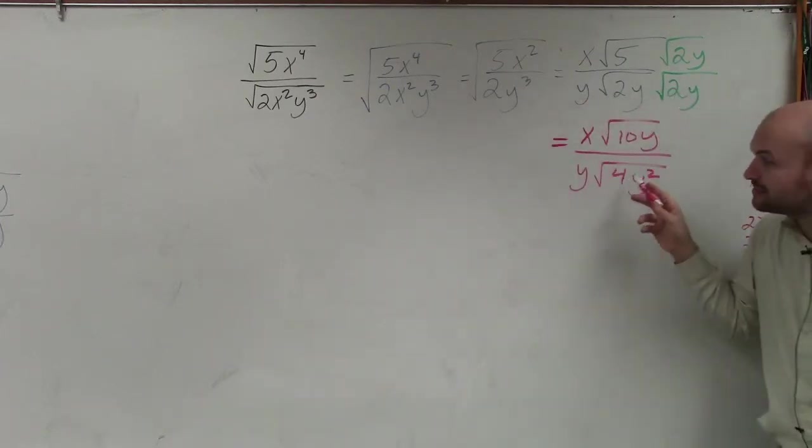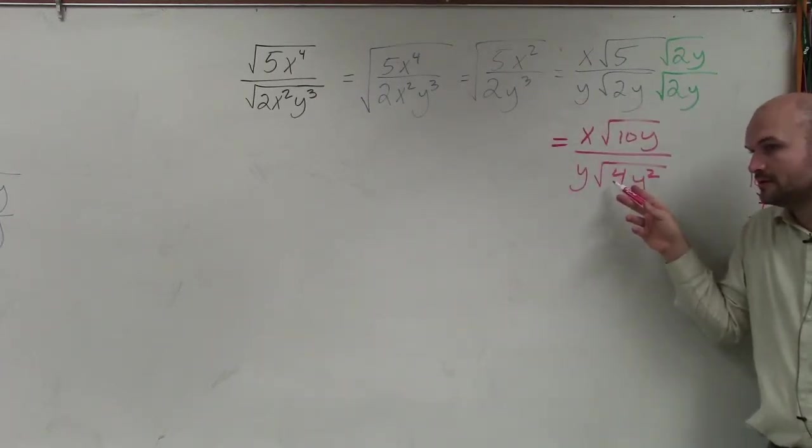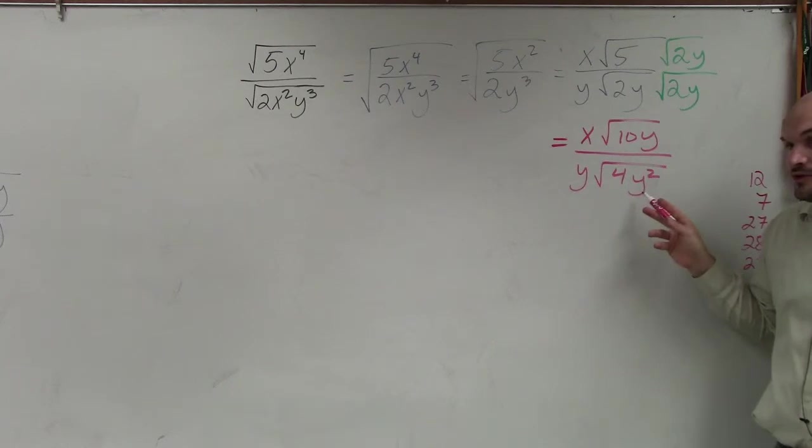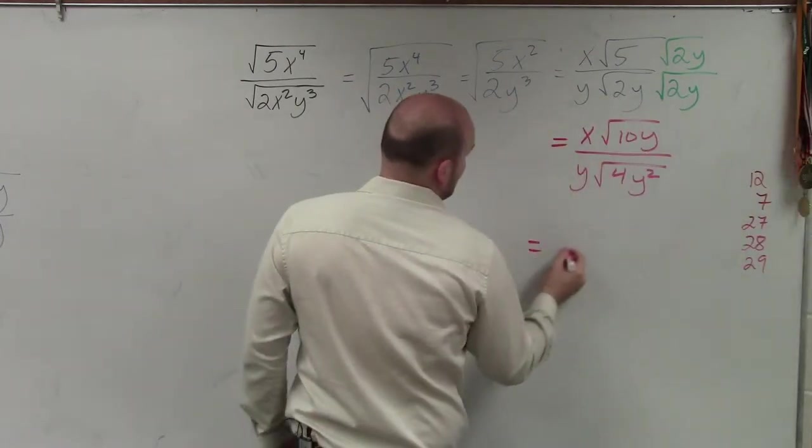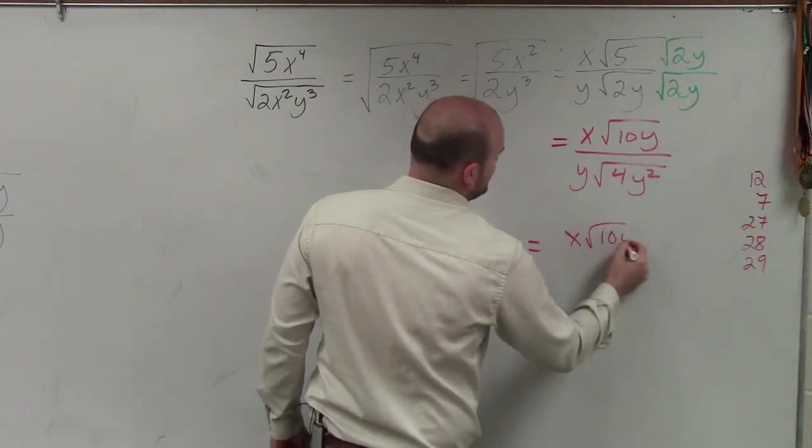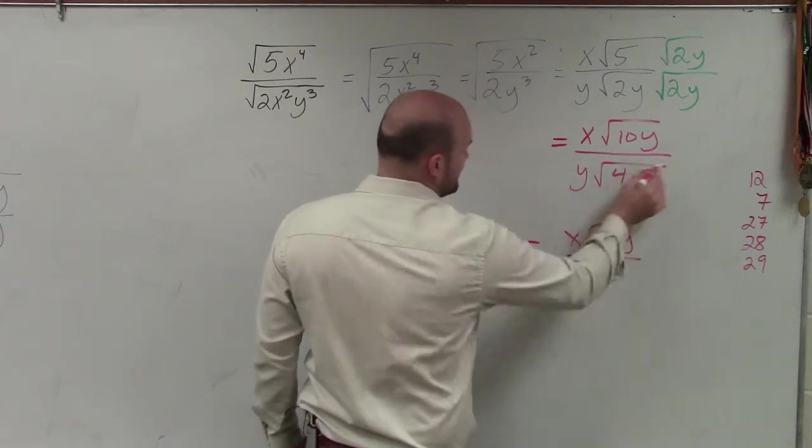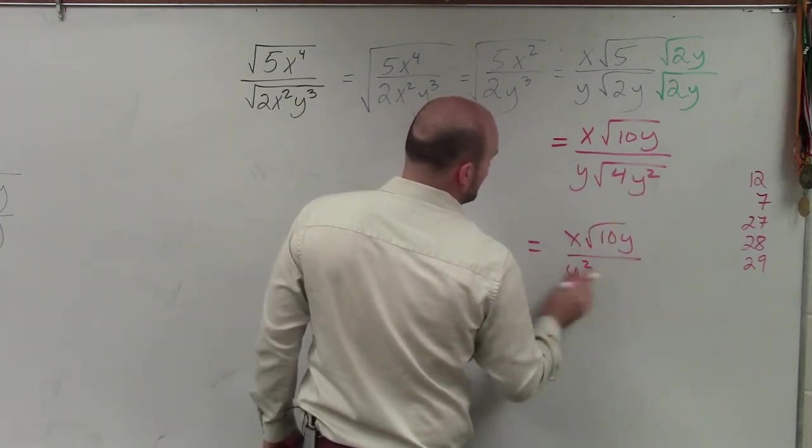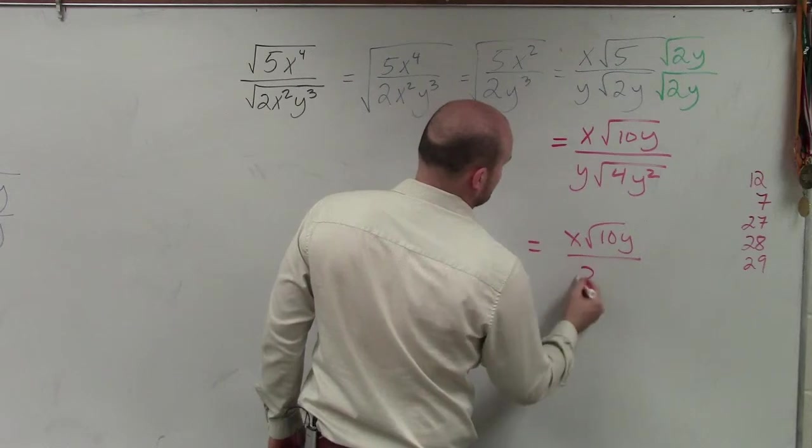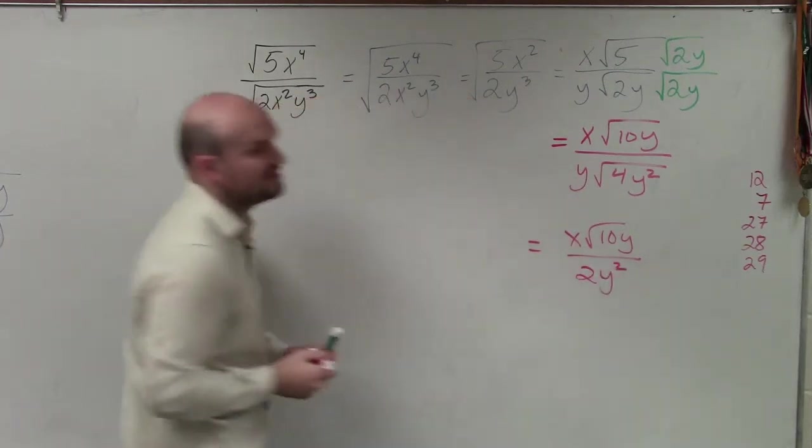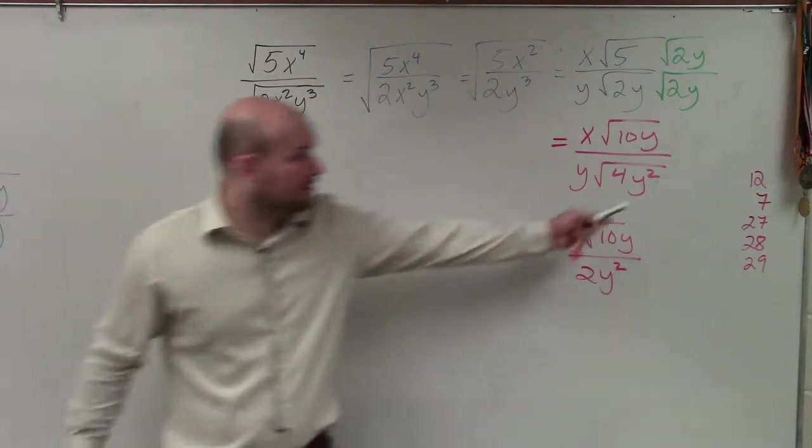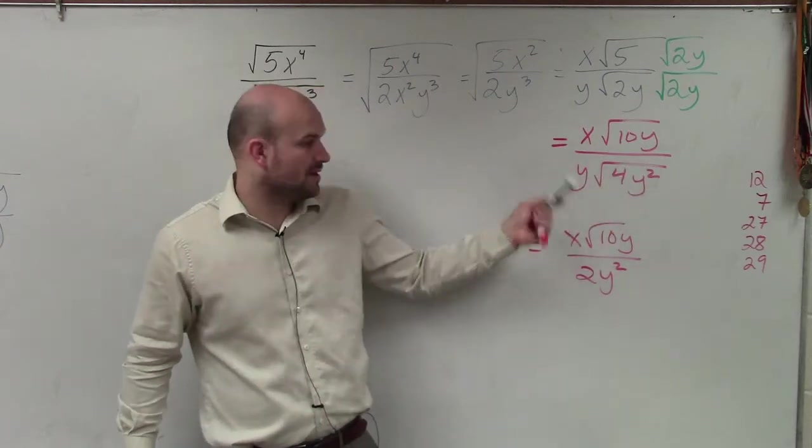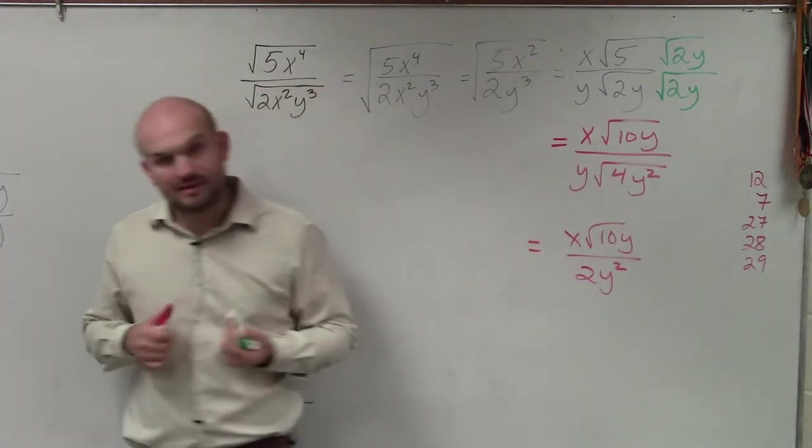Well, now, ladies and gentlemen, can I take the square root of 4? Yeah. Right? And can I take the square root of y? Yeah. So my final answer is x times the square root of 10y divided by 2y squared. Because what I did was I took the square root of y squared, which is y, and then I did y times y, which gave me y squared. That's how I got that.